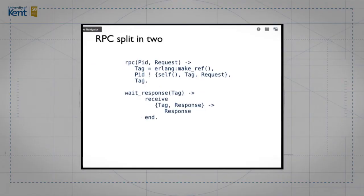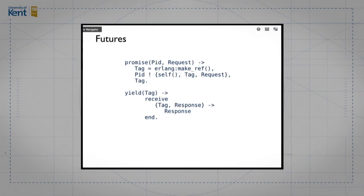Instead of writing our RPC as one function, we've written it as two functions. We said RPC of PID request is tag is element ref. We send the message and we return tag. And in the second clause, we say wait response argument tag. And that waits for a message whose value is a tuple with two arguments, the first argument being tag. Okay. That might look unfamiliar to you. But if we rename it like that, we can rename the first part as promise and the second part as yield. So we've invented a construction which is called futures.